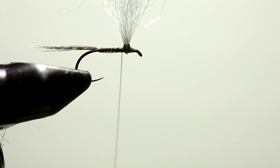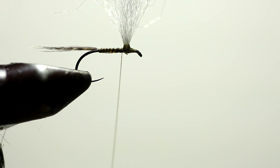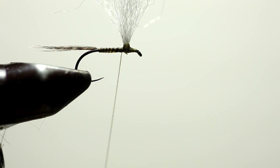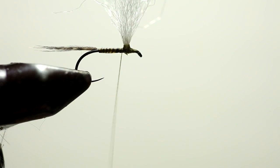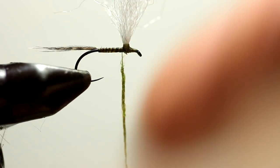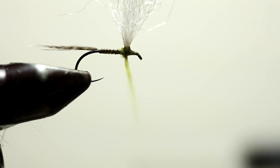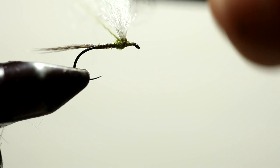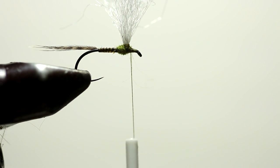Now the next piece of the fly. We're going to take bluing olive super fine dubbing and we're going to dub just a little bit right behind the rear of the post.